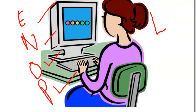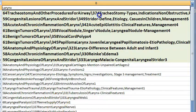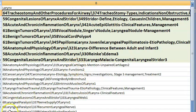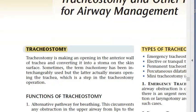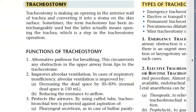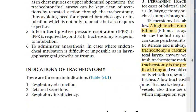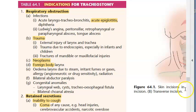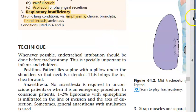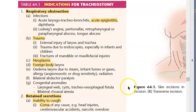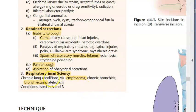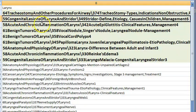Moving on to larynx priority questions. Tracheostomy: types include emergency, elective, permanent, percutaneous, and mini-tracheostomy. Indications: respiratory obstruction (acute epiglottitis, trauma, foreign body, tumours), retained secretions (painful cough, spasm of respiratory muscles, tetanus), and respiratory insufficiency (emphysema, bronchiectasis, atelectasis).